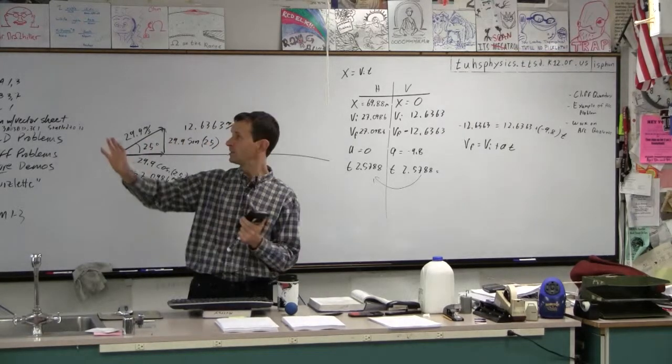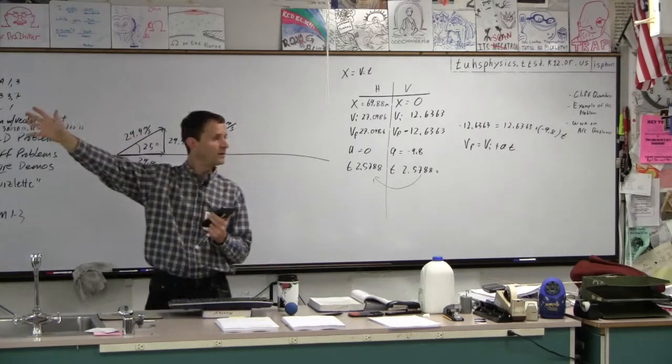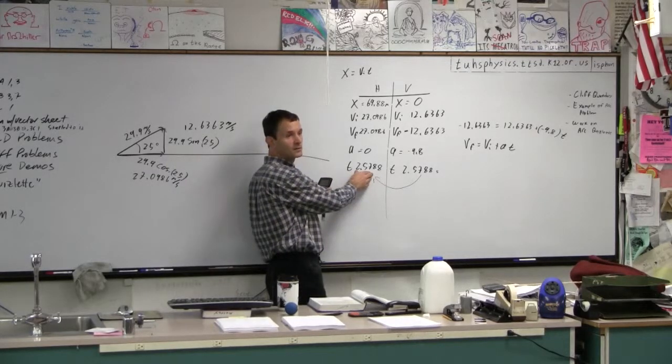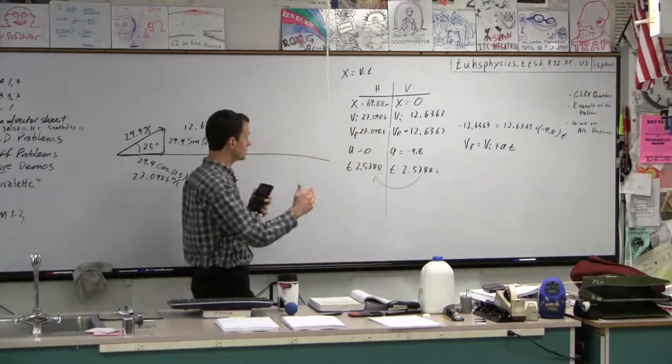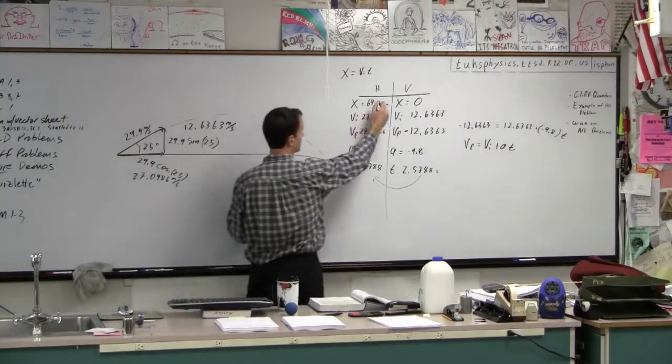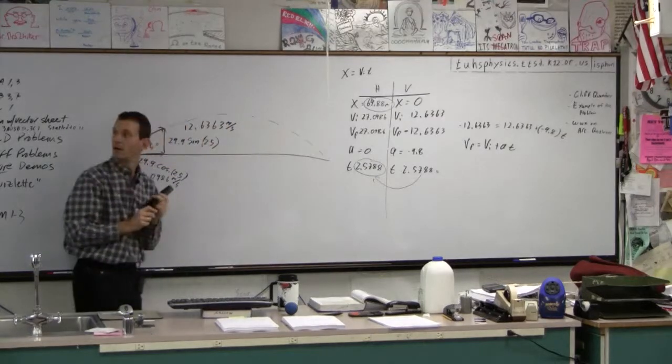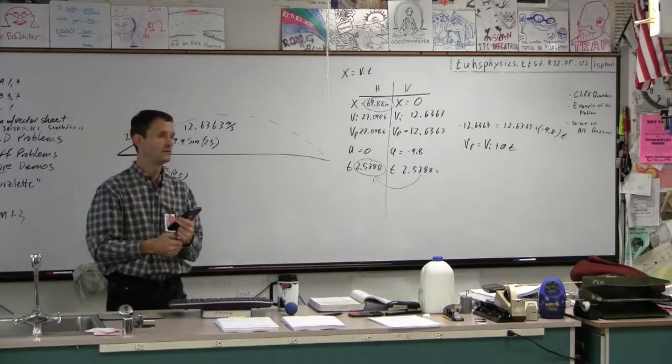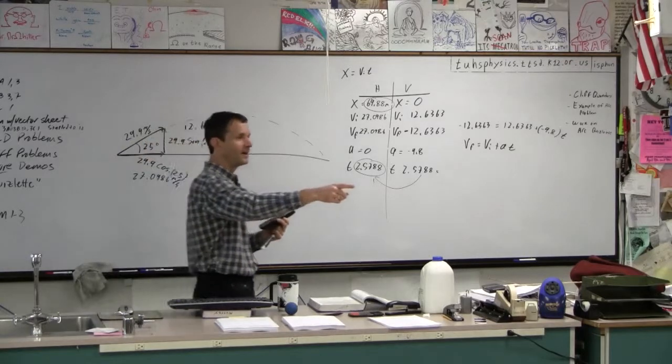Now the question is, have we answered all the questions up there? The first one was find the hang time. Hang time is the time in the air. Did we find that? Yeah, the hang time is about 2.6 seconds. The second question is find the range. Range is the horizontal distance that it travels. And I think we figured that out. Here's the range. Here's the hang time. The next question says, find the speed at the highest point and the greatest height.